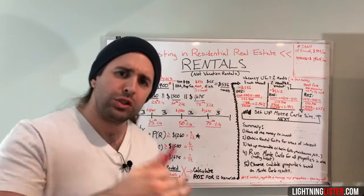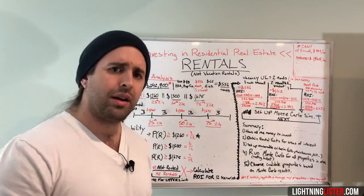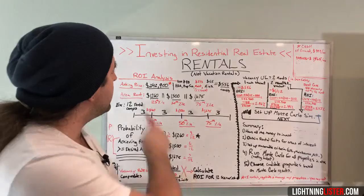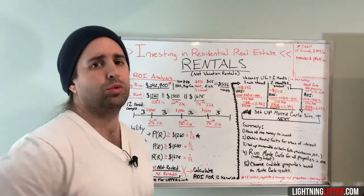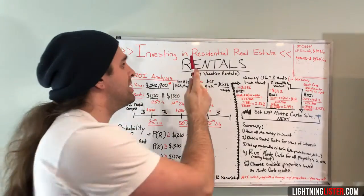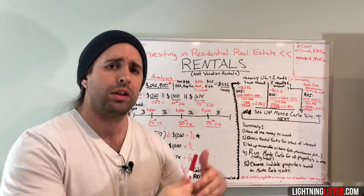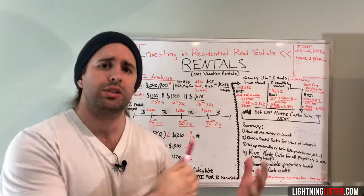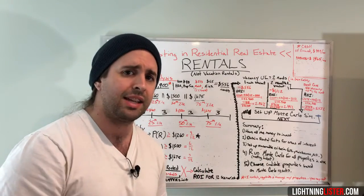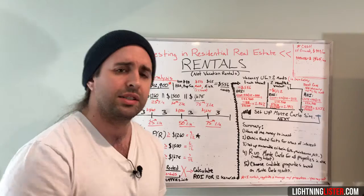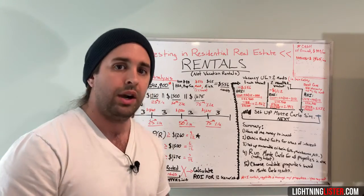What's going on YouTube? Jordan Dubois, owner of LightningLister.com. Today we're going to talk about investing in residential real estate, specifically rentals that are like six months to a year long leases that we provide for tenants and we hold onto them 10, 20 years or whatever.